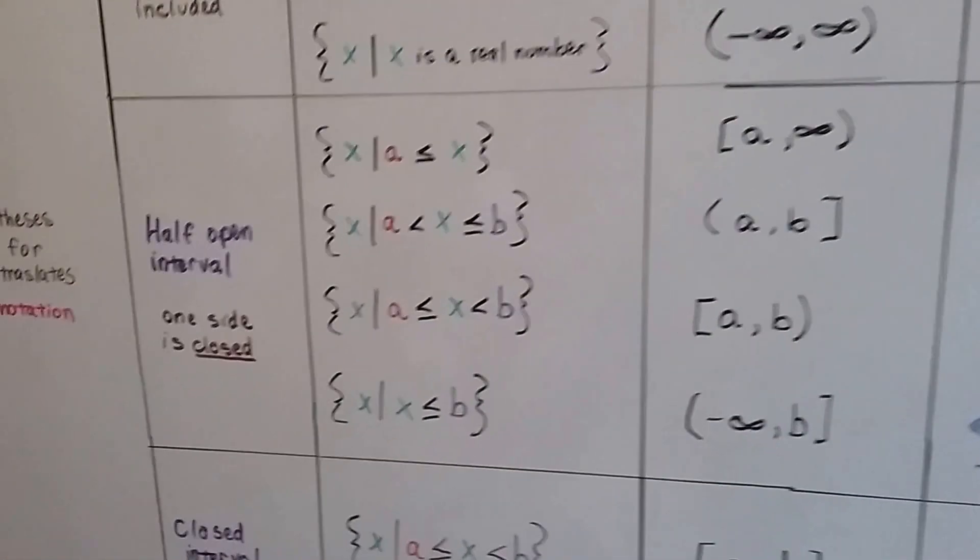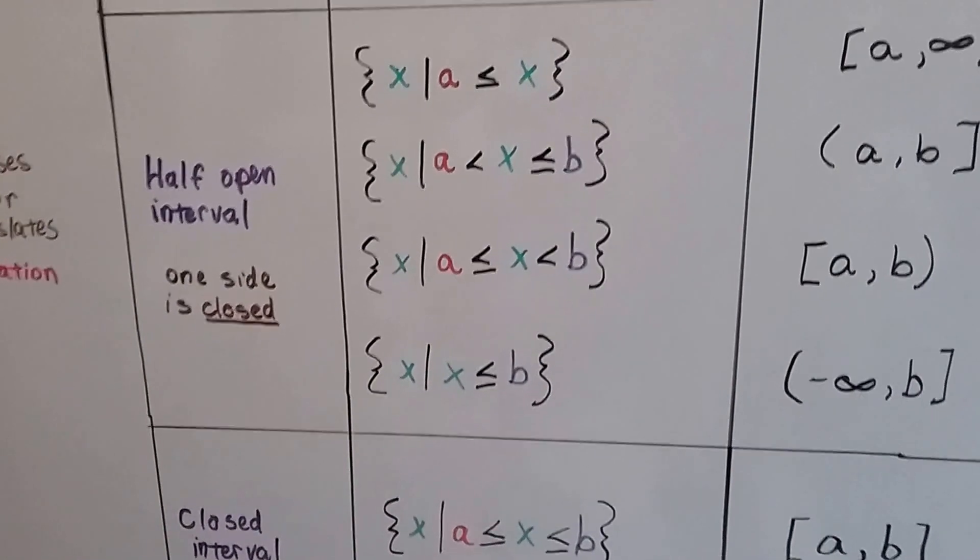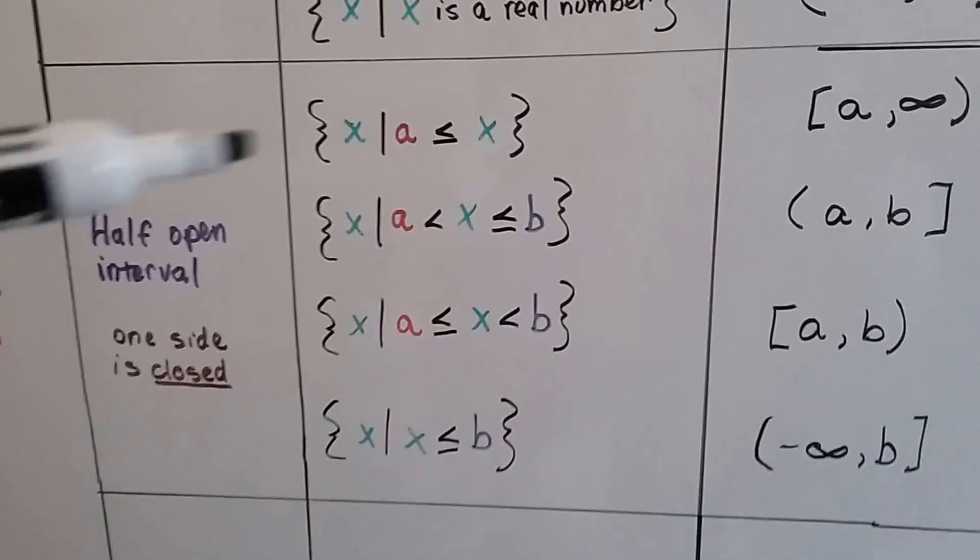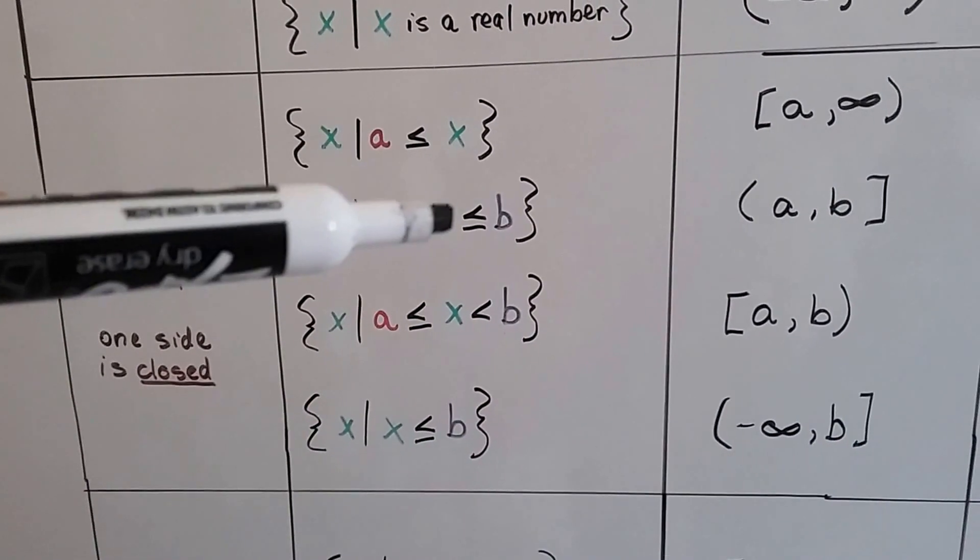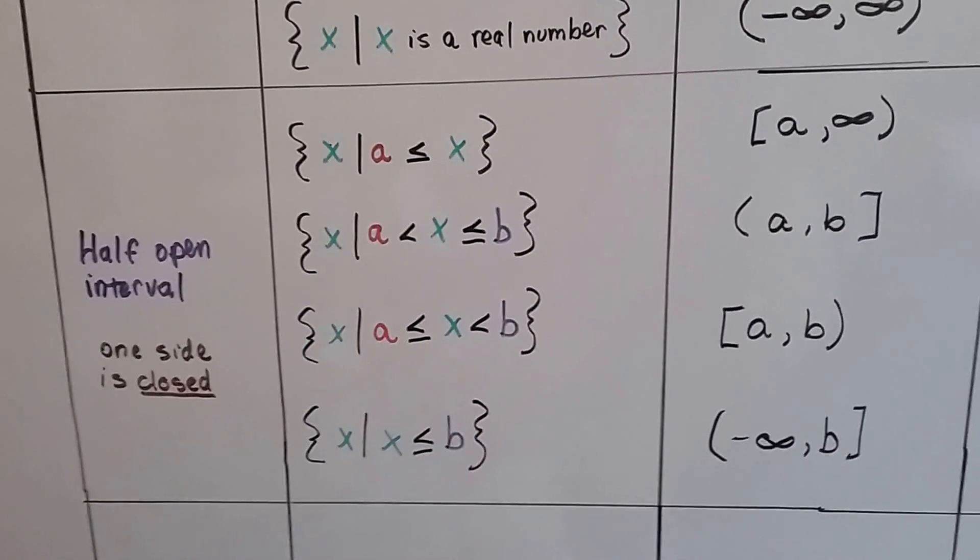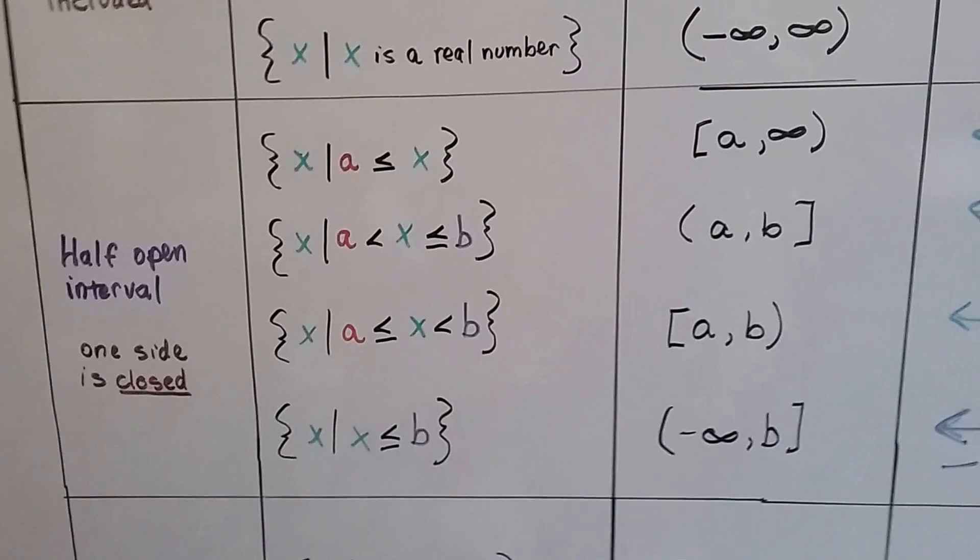If we have a half open interval, then that means one side is closed. It's half open. And if you look, they have or equal to, don't they? Each one in Set Builder Notation has an or equal to.